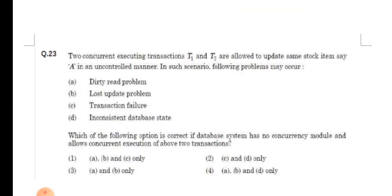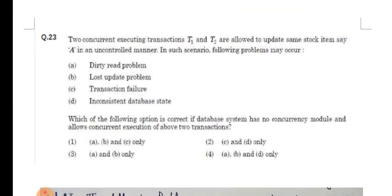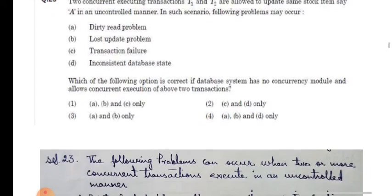In our next question, two concurrent executing transactions T1 and T2 are allowed to update same stock items, say A, in an uncontrolled manner. In such scenario, following problems may occur. Now we have been asked which problems can occur.